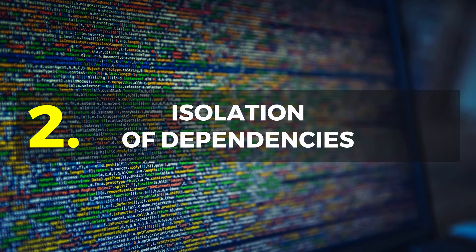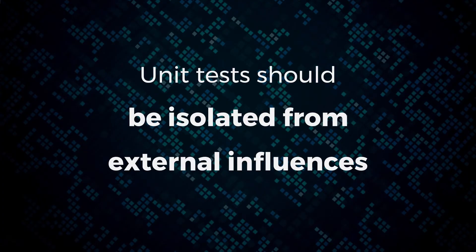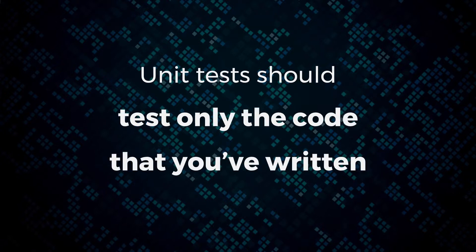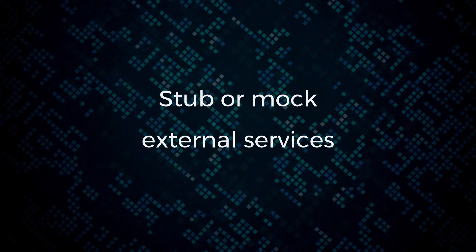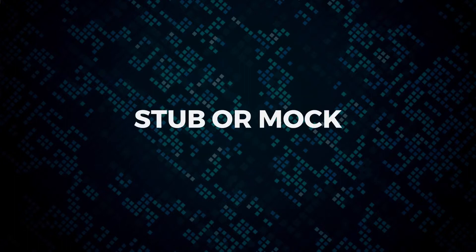Number two: isolate your dependencies. Unit tests should be isolated from any external influences — things like databases or third-party APIs. Your test should only test the code that you've written, not external dependencies. You should attempt to replace your production dependencies with fake data — these are called stubs or mocks — returning fake data that we define from our external services.